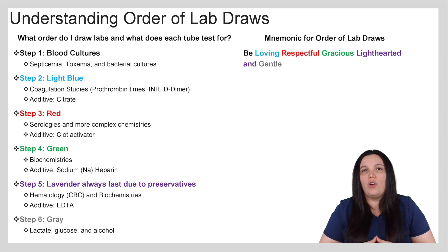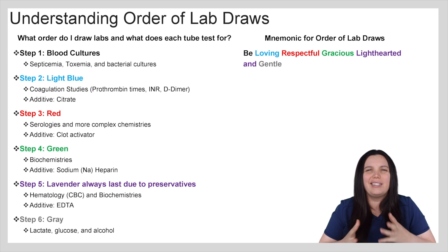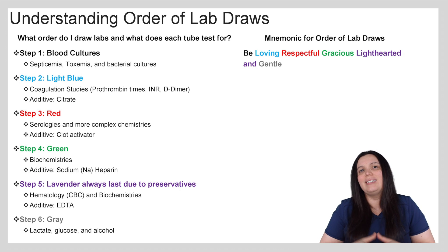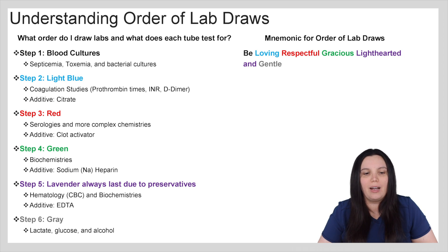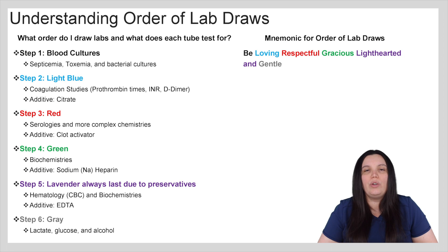In the light blue tube there's an additive called citrate, which is why it's so important that we do these in order. Step three we're going to go for our red top tubes and that's going to be our serologies and more complex chemistries, dependent on particularly what the doctor orders. An additive in that is also called clot activator. Step four we want to use our green top tube. We have biochemistries done in this and they have a sodium heparin additive added in this particular tube.